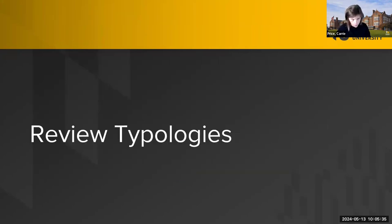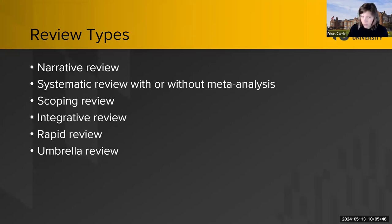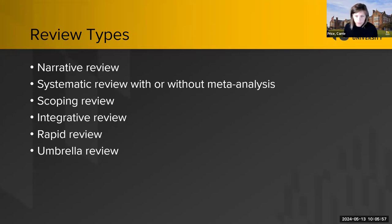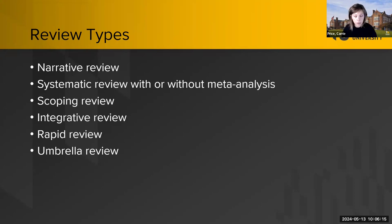Let's talk about different review typologies. These different typologies have different scope and different goals depending on your topic and your ultimate hope for the review. We have narrative reviews, which have been around for a very long time — no specific set of standards and lots of flexibility. Then we have systematic reviews, which can have a meta-analysis or not. Systematic reviews have typically looked at the effectiveness of an intervention or treatment and synthesize the results of multiple studies.